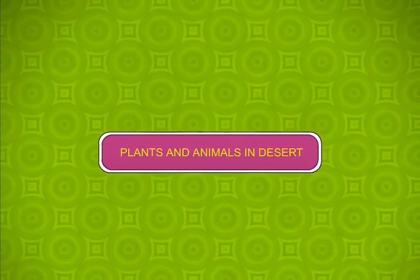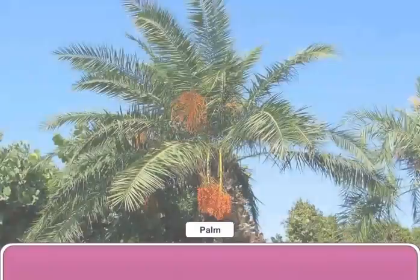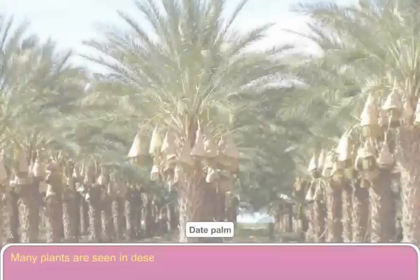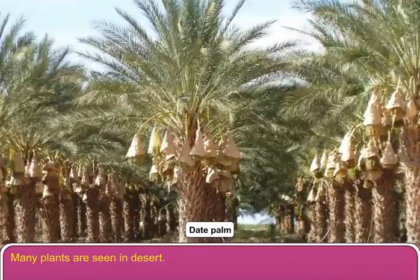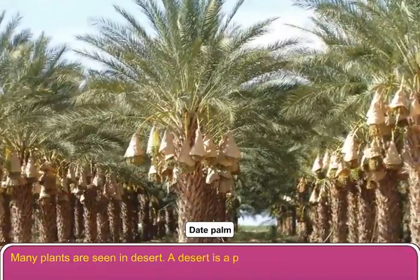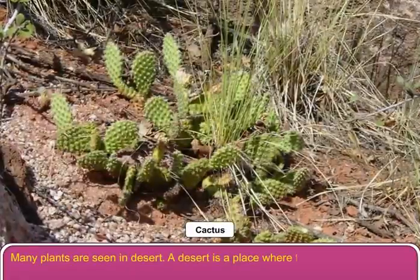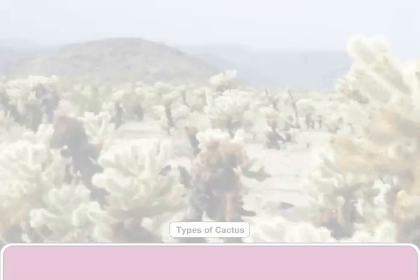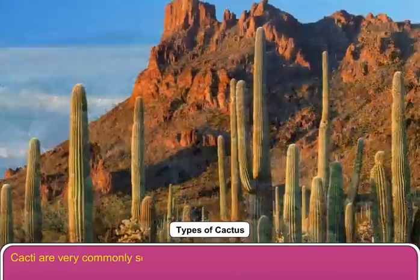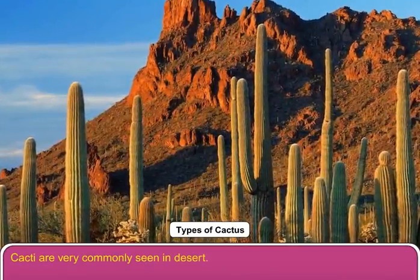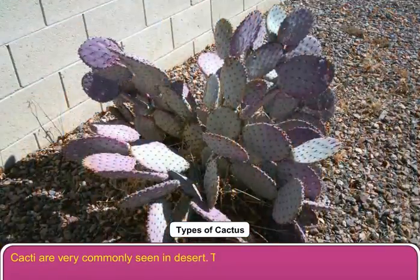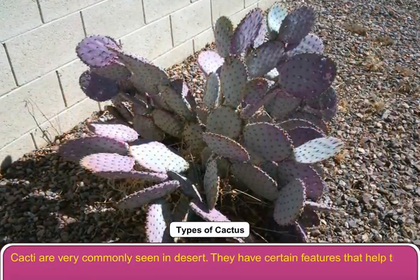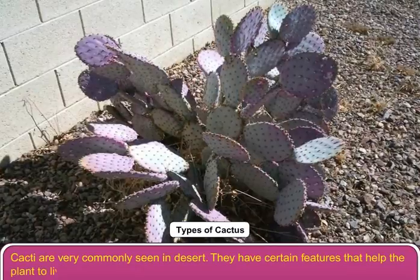Plants and animals in desert. Many plants are seen in desert. A desert is a place where there is scarcity of water. Cacti are very commonly seen in desert. They have certain features that help the plant to live in scarcity of water.